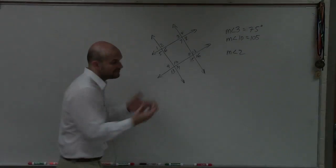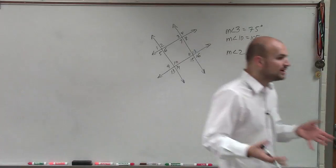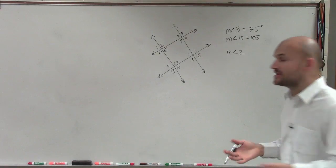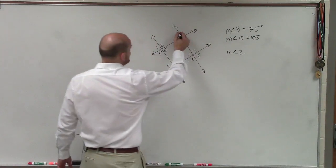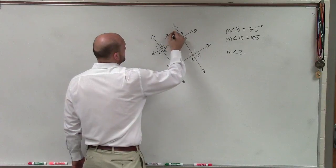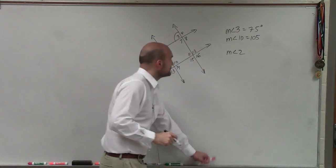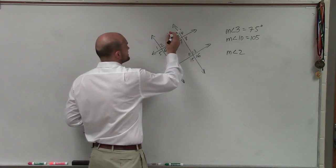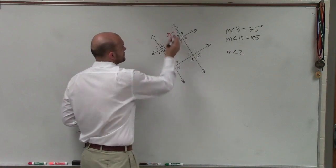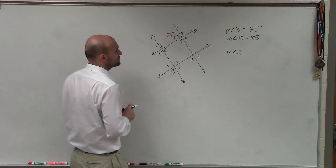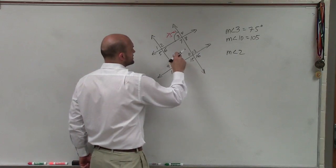In this case, if they give you a figure and tell you what exactly the measure is of each angle in the figure, just write that in. It says measure of angle 3 is 75 degrees. Actually, I'll use a different color so it stands out. Measure of angle 3 is 75 degrees. Then it says measure of angle 10 is 105 degrees.